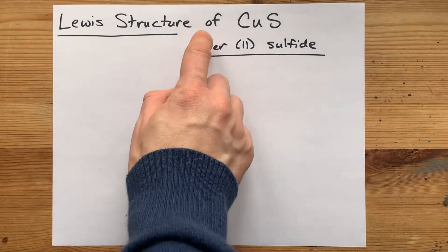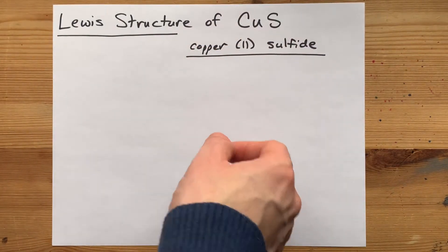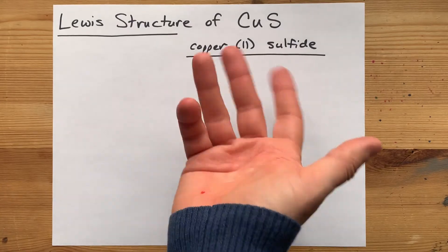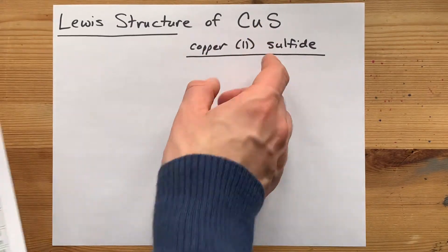The Lewis structure for copper(II) sulfide has a copper-2 ion bonding with a sulfide ion.